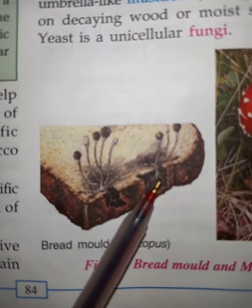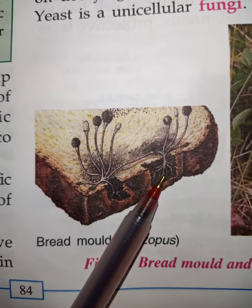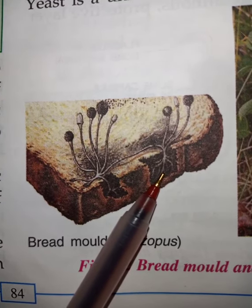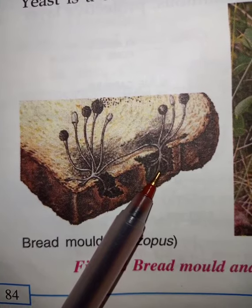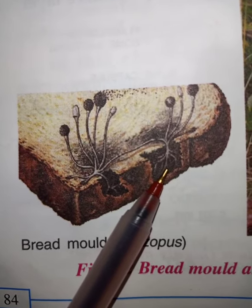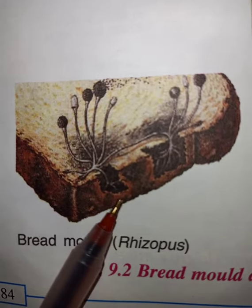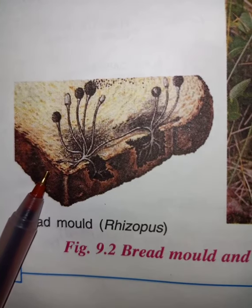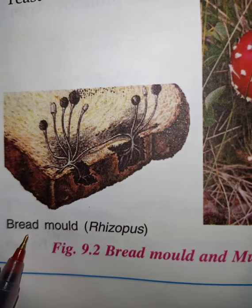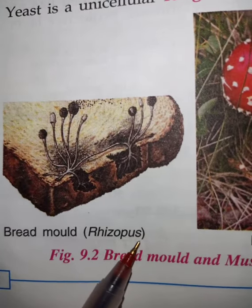When we bring bread from outside, we generally keep it inside the refrigerator. There is an expiry date for bread — almost for one week, bread will be in good condition. After the expiry date, we should not use such products, because at that time there will be a rise of fungi on those products. That black spot on the bread is fungi, and we call it bread mold. The type of fungi is called Rhizopus.